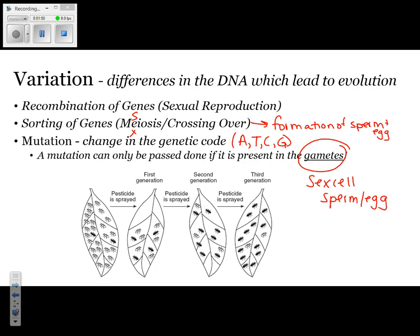If you look at the diagram, you'll notice that there is variation in this population. Within this population of insects, there are two different colors — one is white and the other is black. A farmer has gone and sprayed a pesticide. If you look at the first generation, you'll notice that a lot of the white insects are killed off, but the black insects are still present.